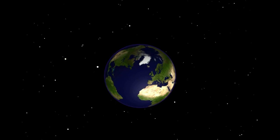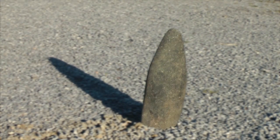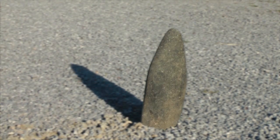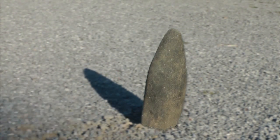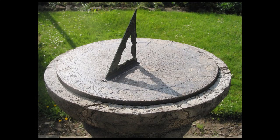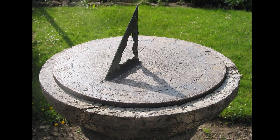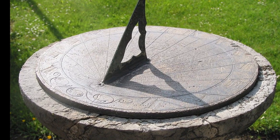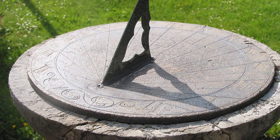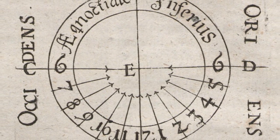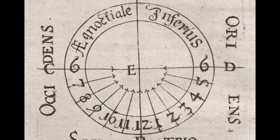The moving shadow cast by a standing stone is a primitive timekeeper — the passing of time revealed in the shadow's motion. Early civilizations transformed these simple devices into sundials: precision devices displaying time as a shadow moving against a carefully designed dial. The appearance of sundials represents a milestone in the evolution of human knowledge.